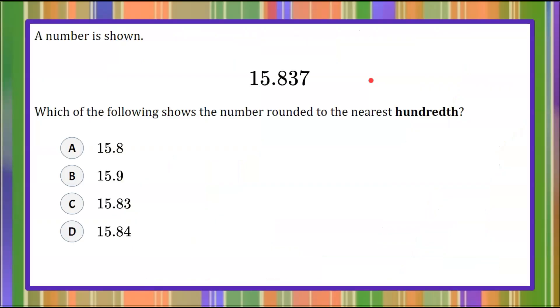Here's our question today. A number is shown: 15 and 837 thousandths. Which of the following shows the number rounded to the nearest hundredth? We're given four answer choices.